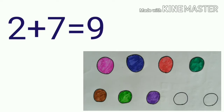Here you can see, 2 circles are unshaded and 7 circles are shaded. So children, how can you add these two numbers? That is, 2 unshaded circles plus 7 shaded circles is equal to 9 circles. That is, 2 plus 7 is equal to 9.